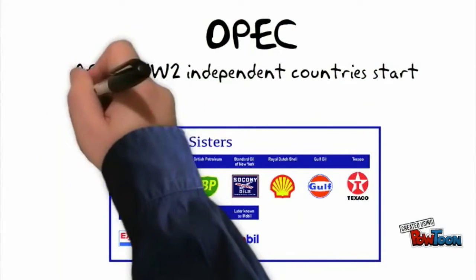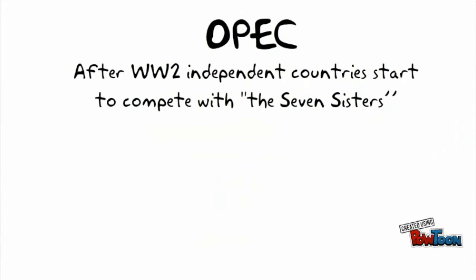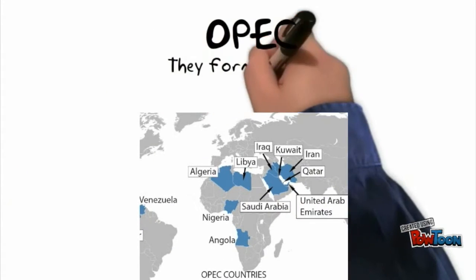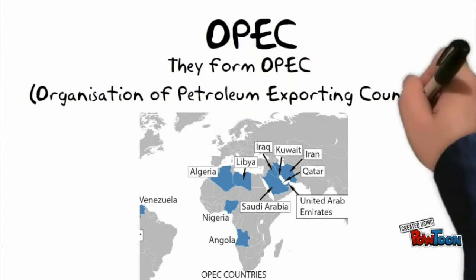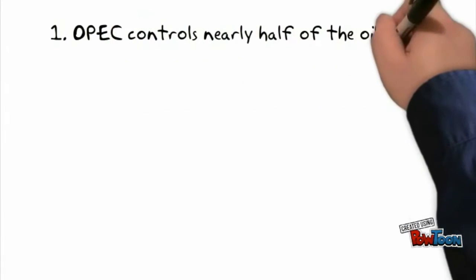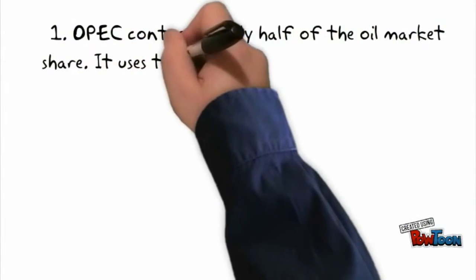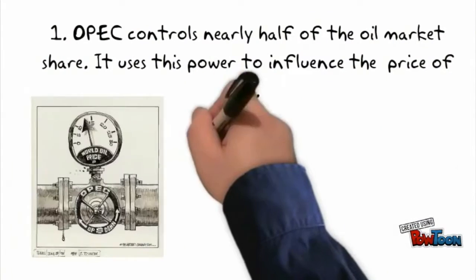After World War II, many newly independent oil-rich nations found themselves having to compete with the Seven Sisters, the seven big Western oil companies. To avoid being pushed around, they united to make one bloc known as OPEC, or the Organization of Petrol Exporting Countries. OPEC controls nearly half the oil world market share, and it uses its power to influence oil prices to its advantage indirectly, by limiting or increasing supply depending on global demand.